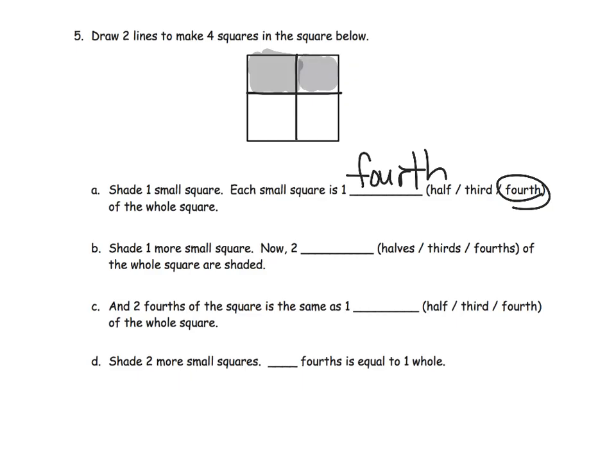Shade one more small square. Sure, I'll do that. Right there. Now, two blanks of the whole square are shaded in. So each one of these was a fourth. So now, we've shaded in two fourths. We have shaded in two fourths. So parents and teachers, we're no longer talking about unit fractions. Now we're actually talking about fractions other than unit fractions. In this case, two fourths. And two fourths of the square is the same as? What fraction? Well, that's the same as one half.